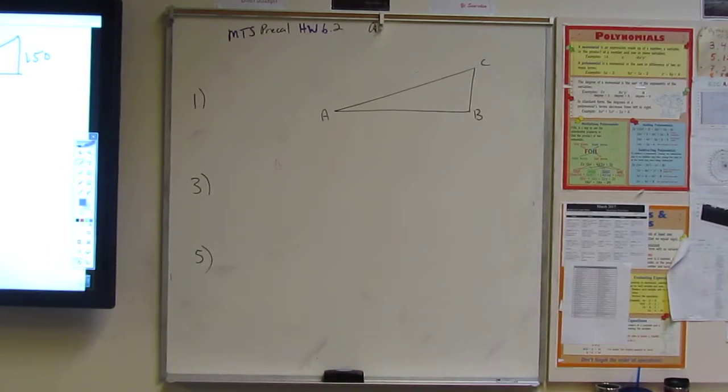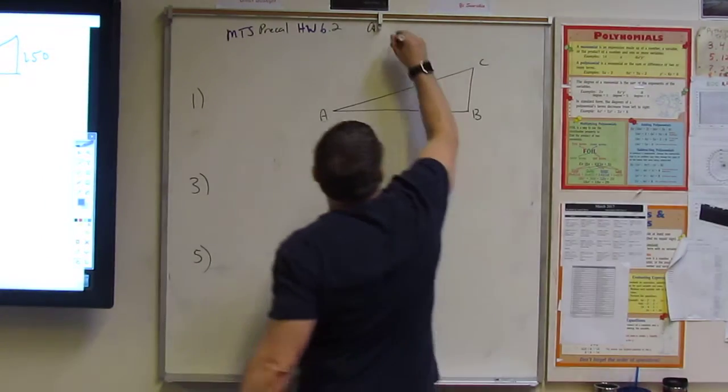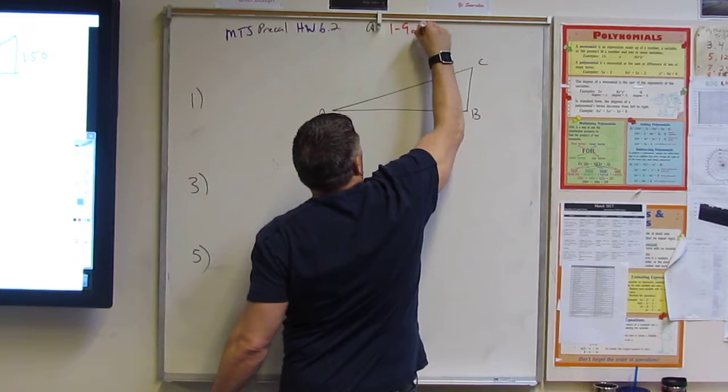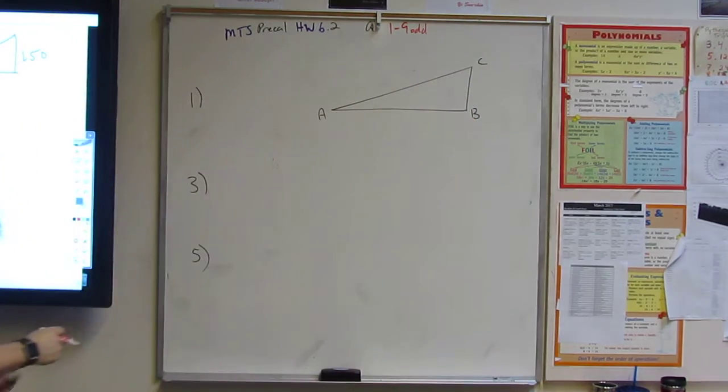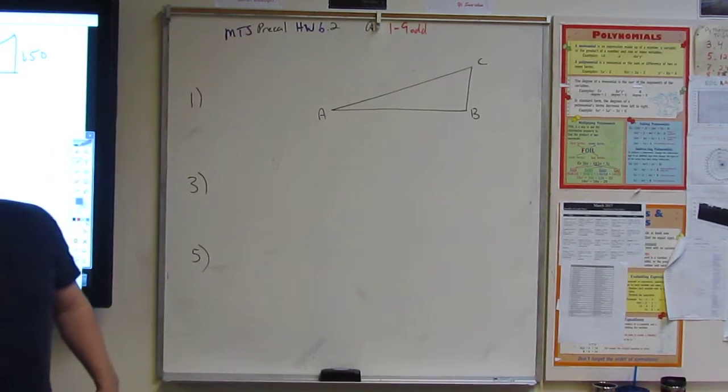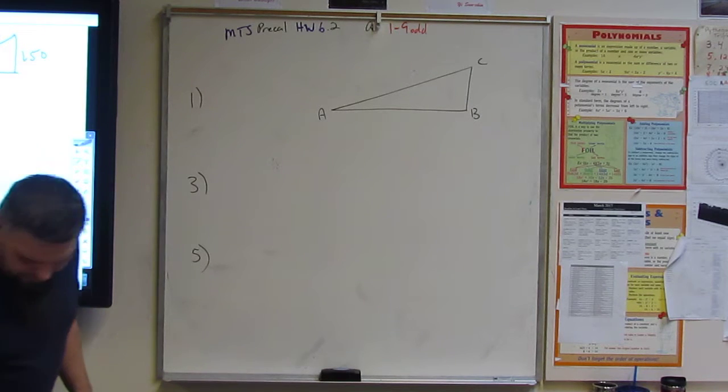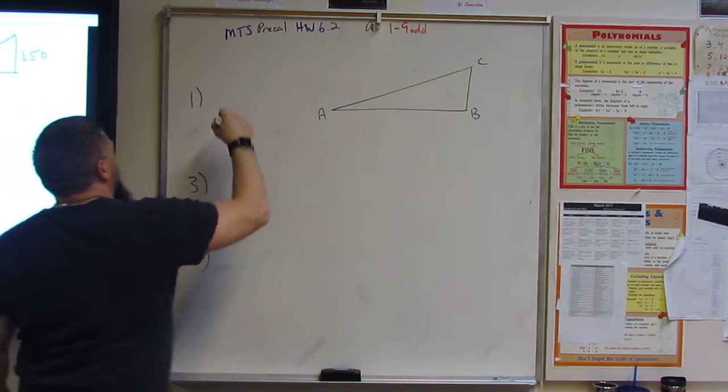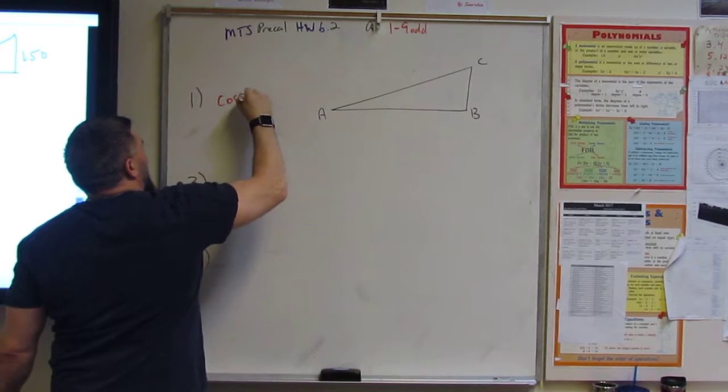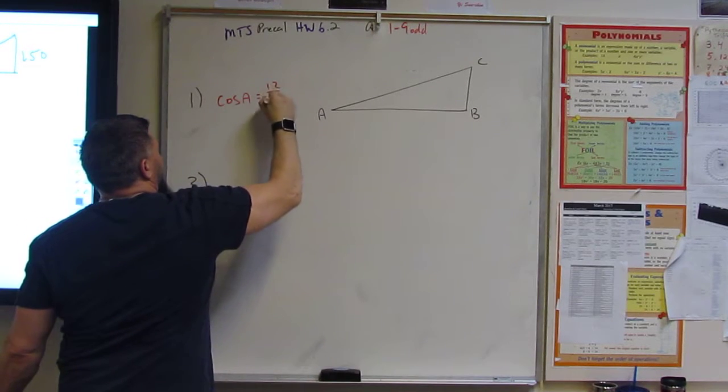We've got 6.2, questions 1 through 9. Okay, number 1. What do they do? Number 1, they said cosine of A equals 12, cosine A is equal to 12 over 13.